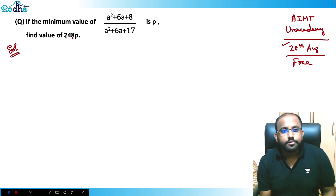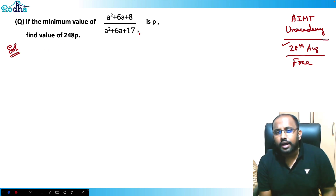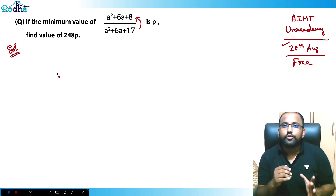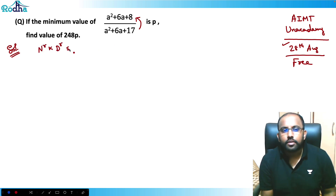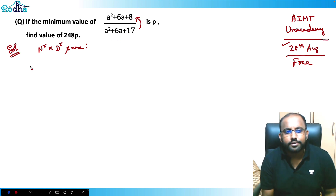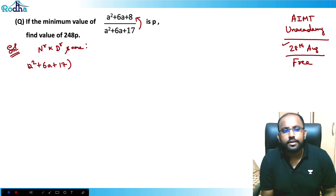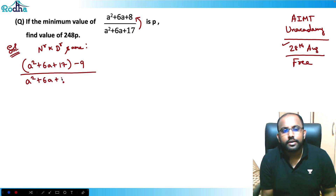The intuition behind such a question is: whenever we see this kind of question with numerator and denominator, we think about making the numerator free of variables relative to the denominator. My first step is to try to make the numerator and denominator the same. So I can write the numerator as (A² + 6A + 17) minus 9, divided by (A² + 6A + 17).